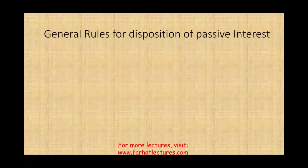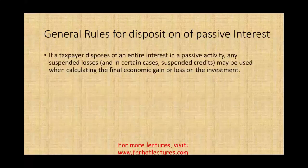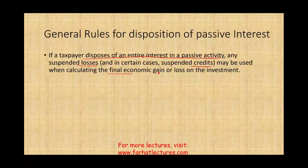The first thing I'm going to go over is the general rules for the disposition of passive interest, which we touched upon briefly in a prior session. Simply put, if a taxpayer disposes of the entire interest in a passive activity, any suspended losses — and in some circumstances credits — may be used when computing the final gain or loss on the investment. Once you get rid of the business, any suspended losses and any suspended credits, you can use them.